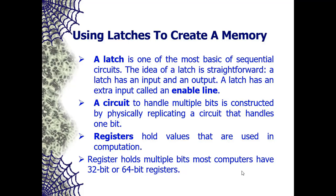When we discuss a processor, we have elements of memory commonly referred to as registers, which serve as short-term storage units within the CPU. Registers hold values that are used in computation — values that will be added together, for example. Each register holds multiple bits; most computers have either a 32-bit or a 64-bit register. A circuit to handle multiple bits is constructed by physically replicating a circuit that handles one bit.